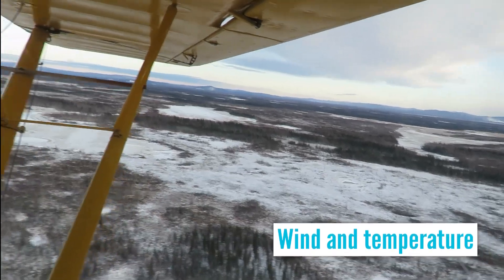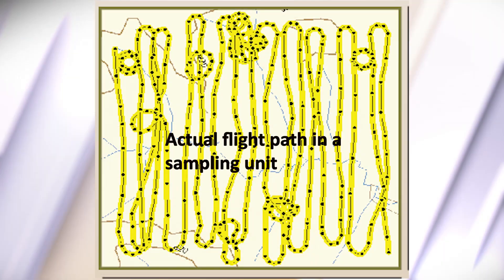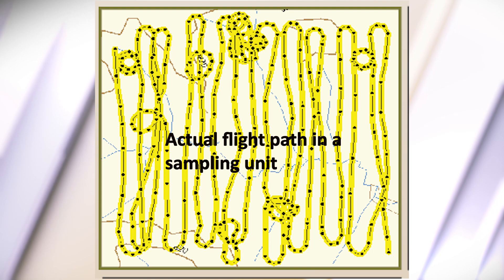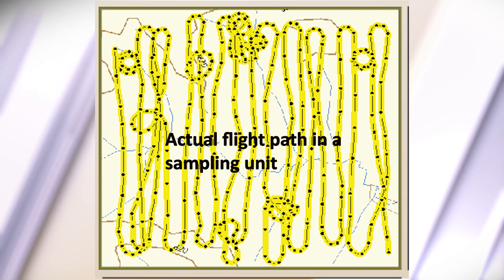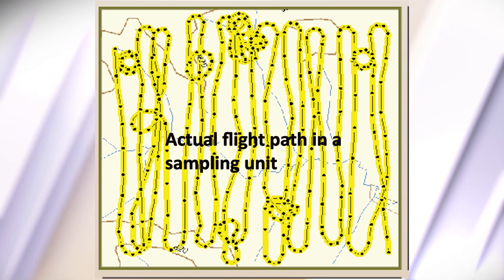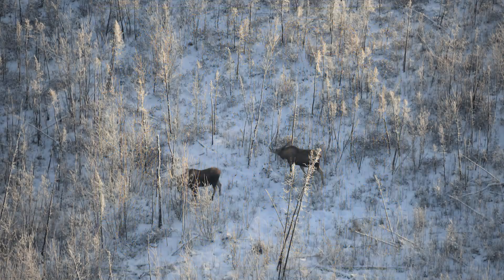When the conditions are all good, pilots with observers fly transects across the selected units looking for any moose. When they see moose, they circle them to determine the age and sex class of the animals, record the data, and see if there are any more moose in the area.